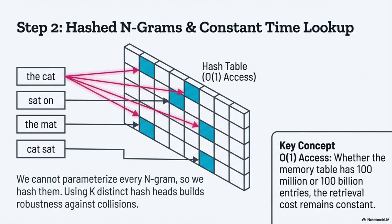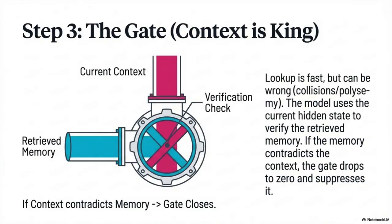The paper is really honest in Section 6 about the U-shaped scaling law — they don't just claim more memory is always better, which adds a lot of credibility. They swept the capacity allocation ratio, systematically taking sparse budget away from MOE experts and giving it to the Enneagram memory module. They found a very clear U-shaped curve: pure MOE is suboptimal because it can't recall things efficiently, and pure memory is suboptimal because it can't compose or think dynamically.